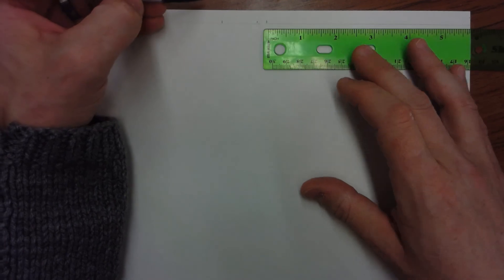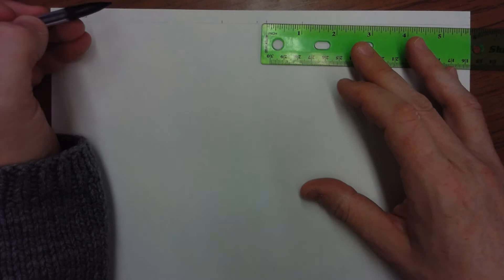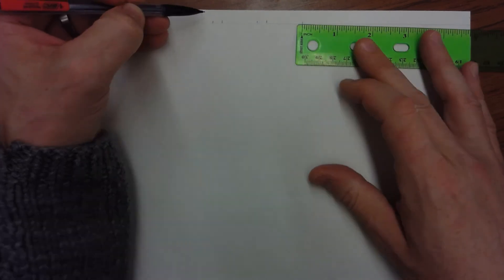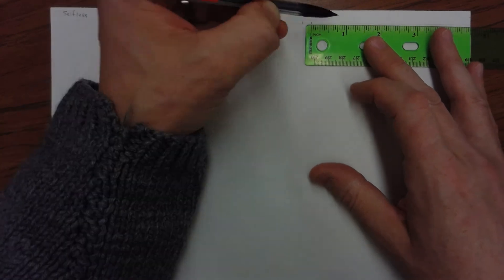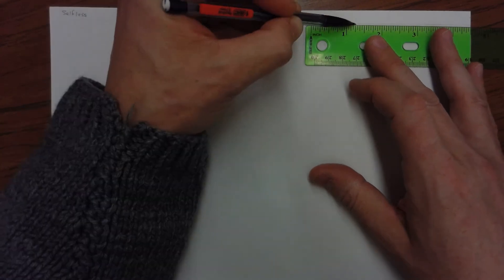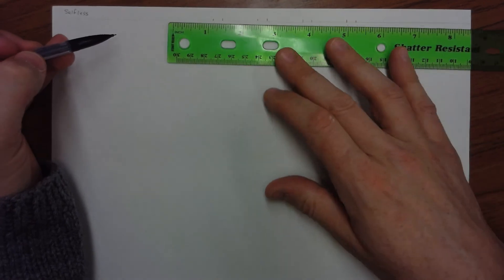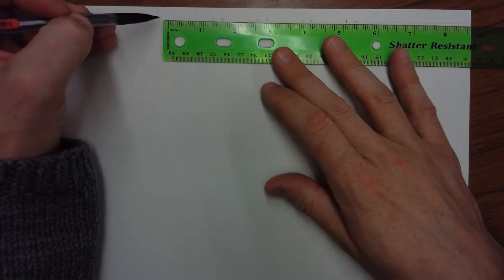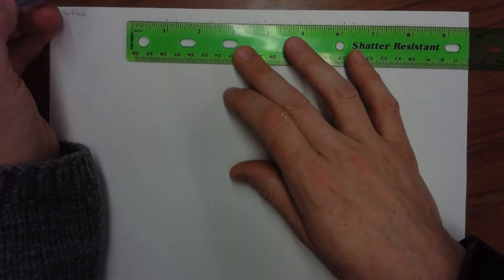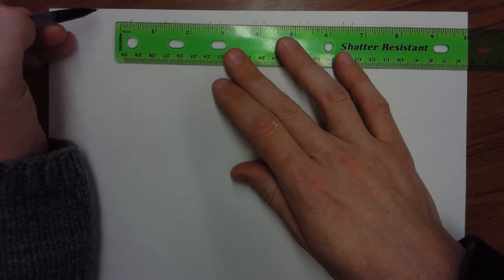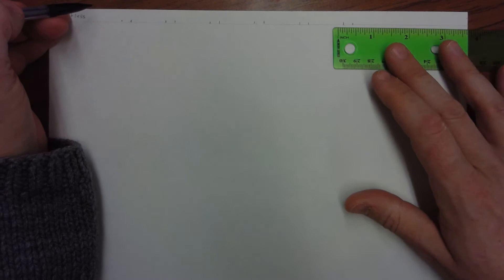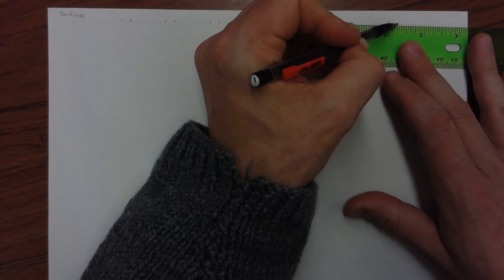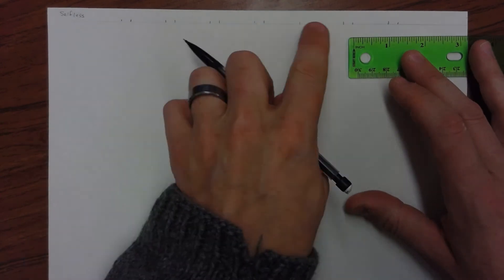Go an inch this way. And an inch this way. Quarter of an inch that way. Quarter of an inch that way. Inch. Quarter of an inch. One, two, three, four, five, six.